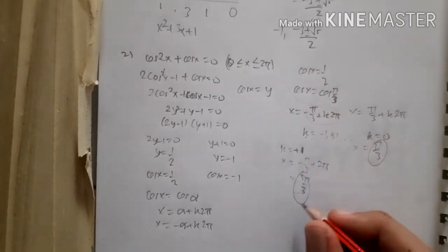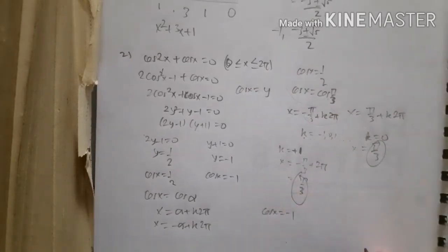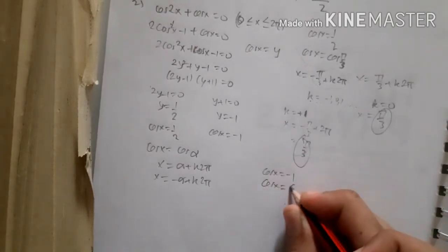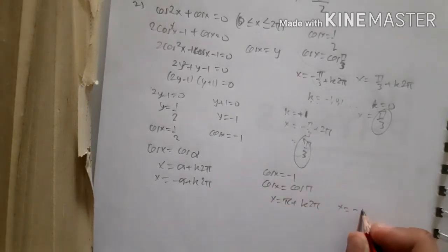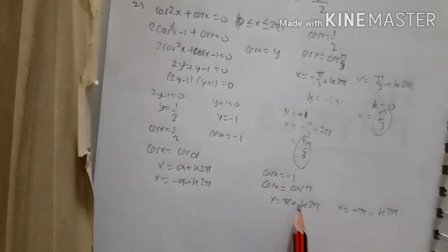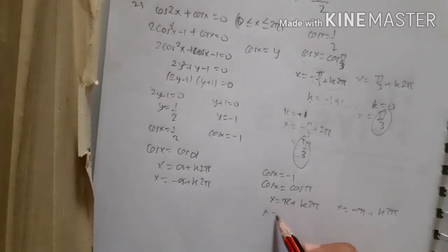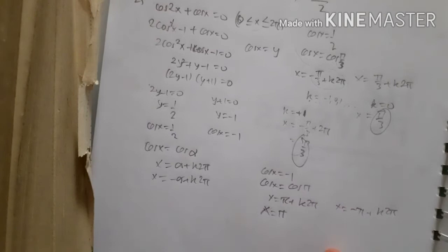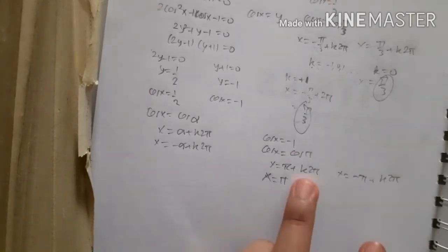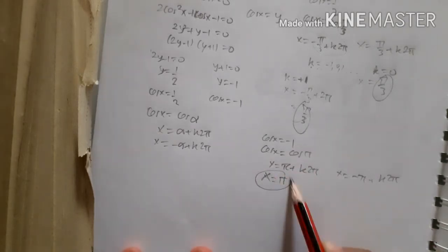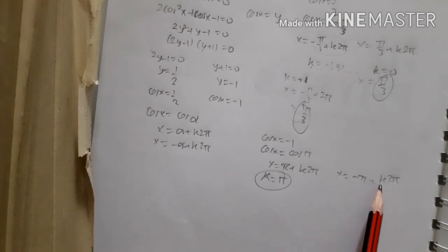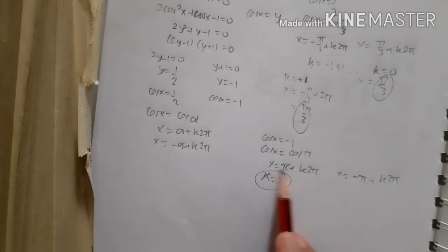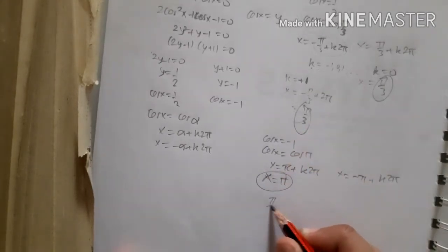For the second case, cos x = −1, the angle is π. The general solution gives x = π + 2kπ and x = −π + 2kπ. With k = 0, x = π (valid). Other k values give values outside [0, 2π]. So from this equation, x = π is the only solution.